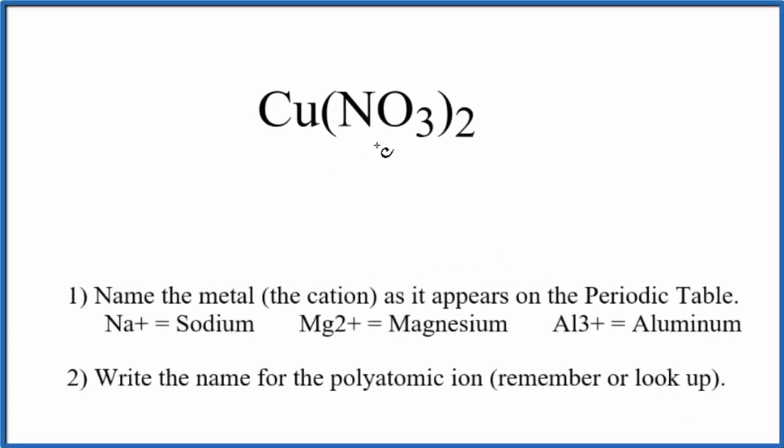To write the name for Cu(NO3)2, we first need to recognize that we have this nitrate here. This is a polyatomic ion, so we have nitrate. We actually have two of them bonded to the copper.